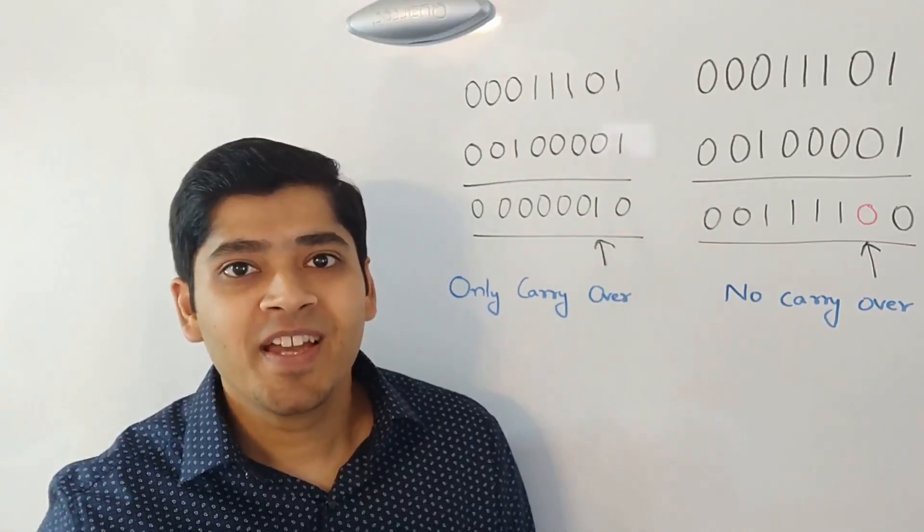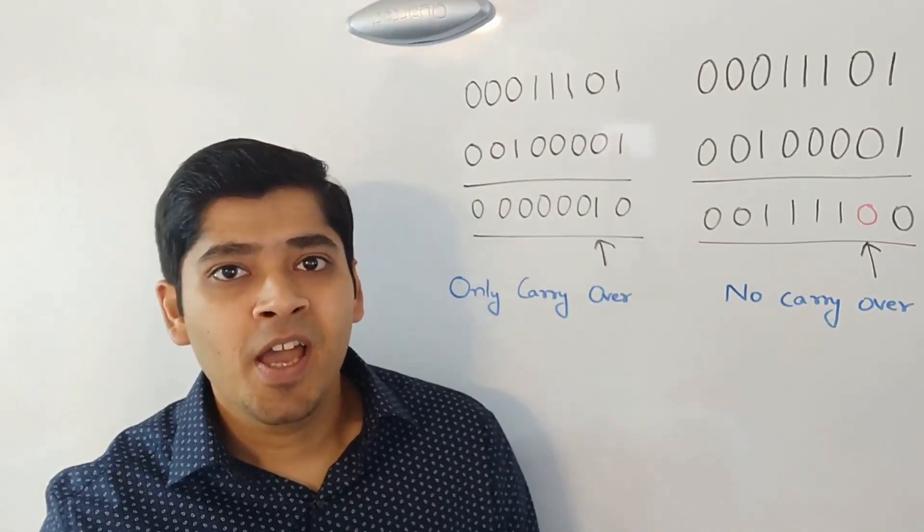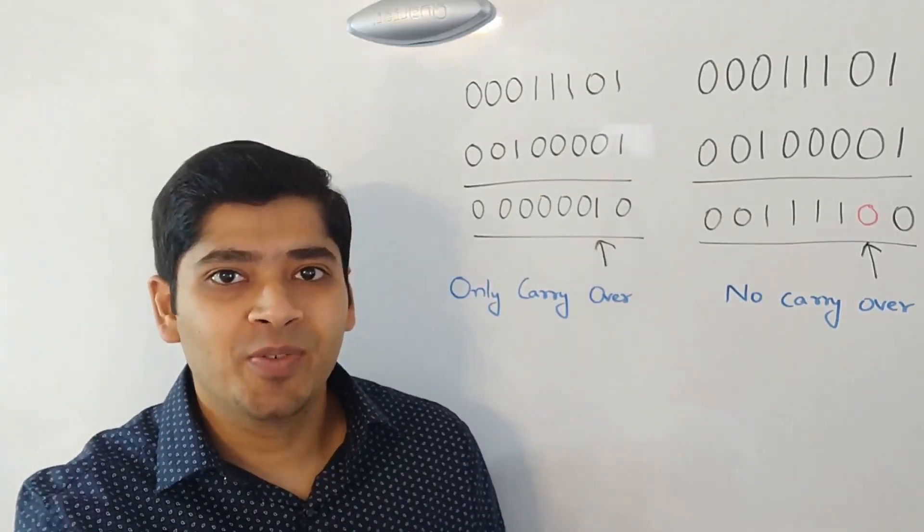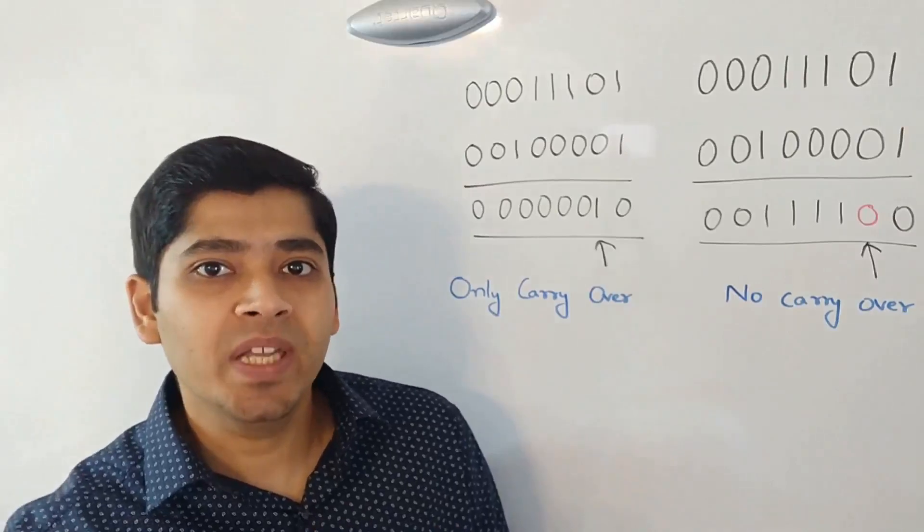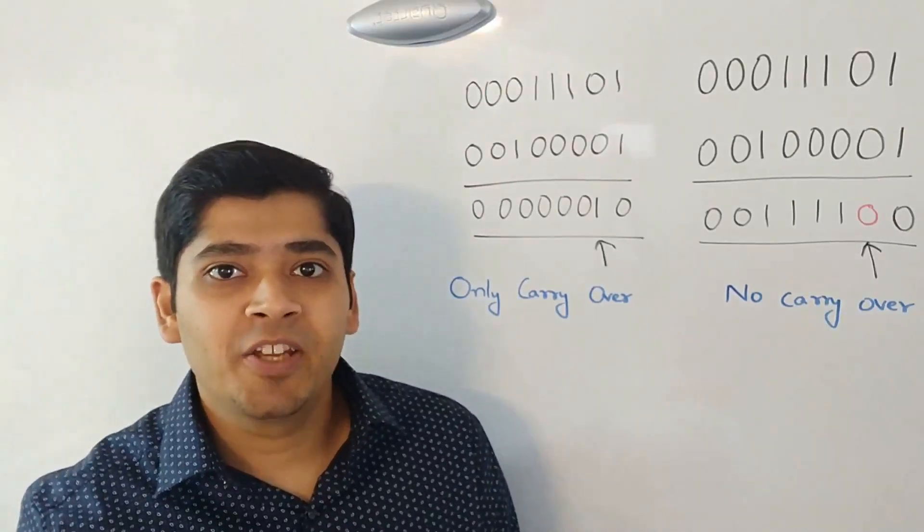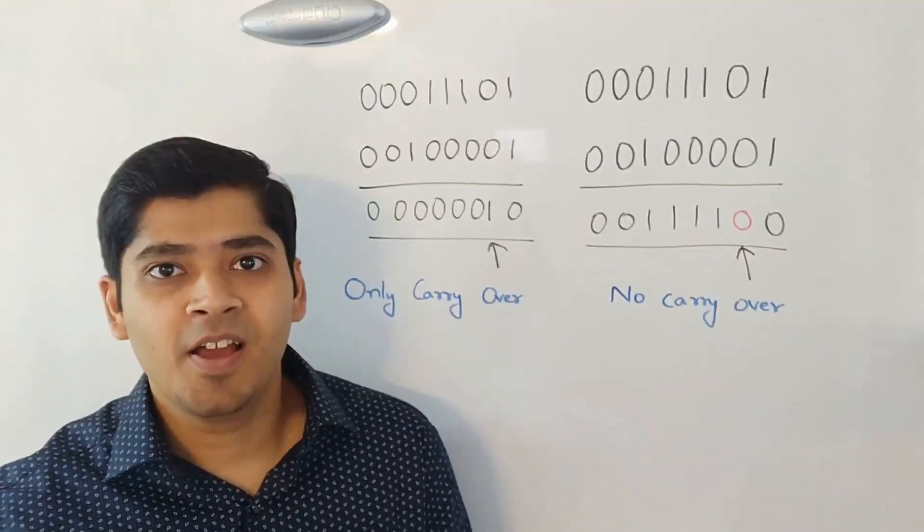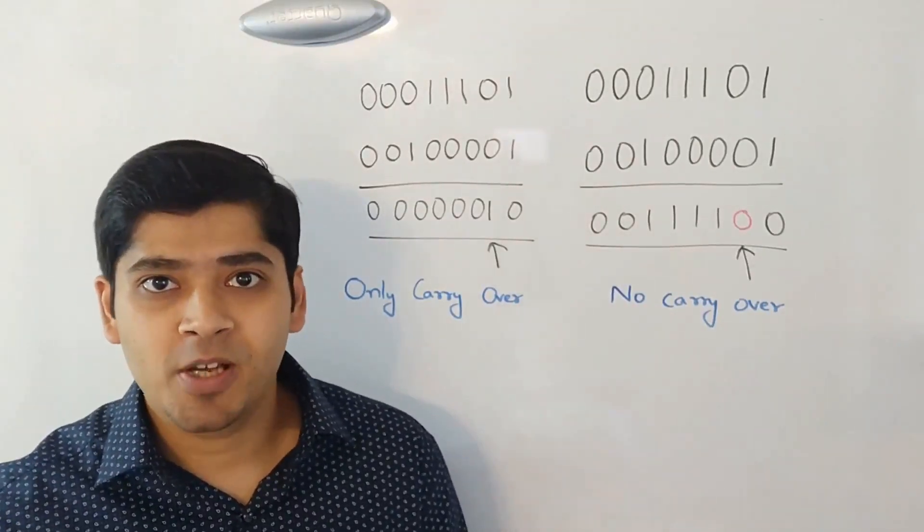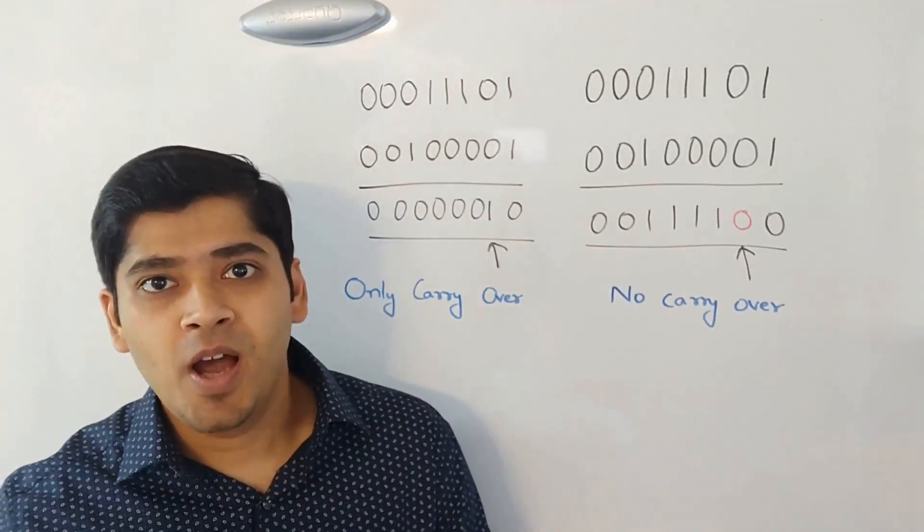Now, here is the thing to realize. If you sum up these two components, that is the result with no carry over and the result with only carry over, you will get your final result. But the problem was that we are not allowed to use the plus operator. So how do we tackle that?